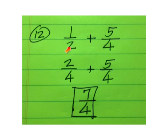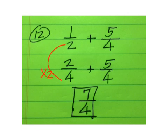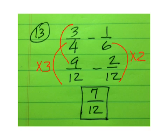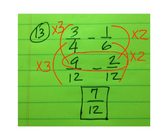For this one, the least common multiple between 2 and 4 is 4. So this fraction stays the same, but on the other one we have to make adjustments. 2 times 2 is 4, and 1 times 2 is 2, plus 5 is 7. So that's where we get 7 over 4. On number 13, the least common multiple is 12, so I had to multiply by 3 here and by 2 there. 3 times 3 is 9, and 1 times 2 is 2. 9 minus 2 is 7, so it's 7 over 12.